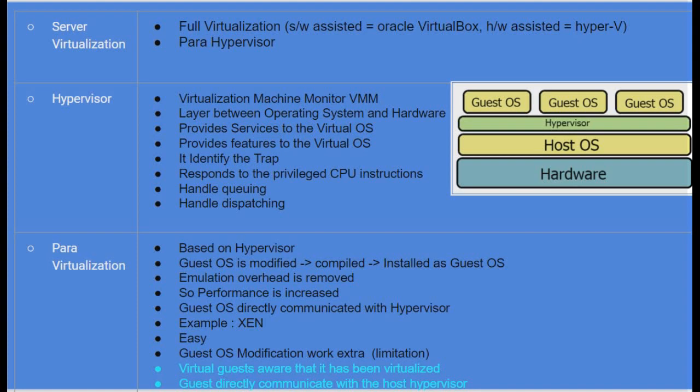Every hypervisor has a virtual machine monitor. It is a layer between the operating system and hardware. It provides services and features to the virtual operating system. Every time it identifies a trap, it responds to privileged CPU instructions. It can handle queuing and dispatching.